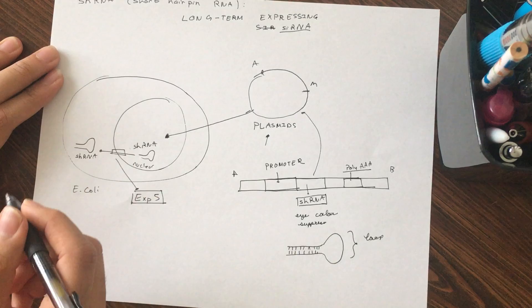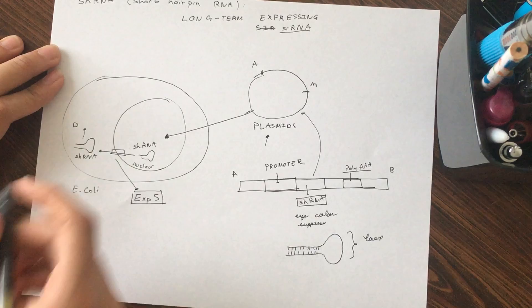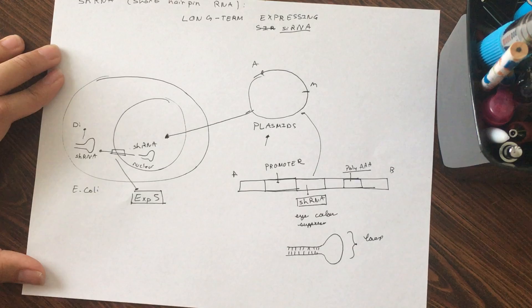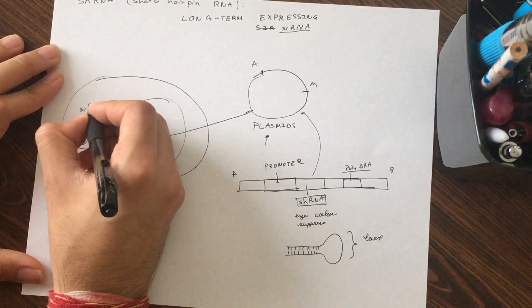It can actually go through dicer - remember the dicer that we were talking about in a couple videos prior that cleaves ribonucleases, that cleaves the dsRNA into the siRNA. It uses that dicer to make siRNA.